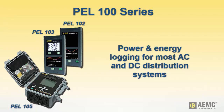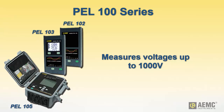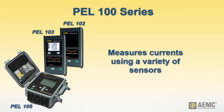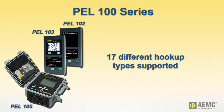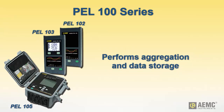For demanding requirements, the Power and Energy Logger PEL series provides all the necessary functions and features for power and energy logging for most 50 Hz, 60 Hz, 400 Hz, and DC distribution systems worldwide. Primary users include contractors performing power system evaluation and monitoring. These instruments measure phase-to-phase, phase-to-neutral, and phase-to-earth voltage up to 1,000 volts, and phase-to-neutral current using a variety of external current sensors. A total of 17 types of electrical hookups are supported. Measurement data is used to calculate numerous values including active, reactive, and apparent power and energy, power factor, harmonics and total harmonic distortion, and others. Quantities can be aggregated from 1 minute to 1 hour and stored on an SD card.